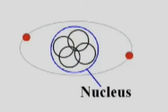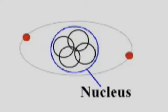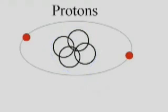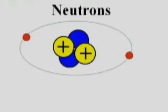If you have ever studied the atom, you will know that an atom has a compact center called the nucleus. The nucleus contains two types of particles: protons, which have a positive electric charge, and neutrons, which have no electric charge.